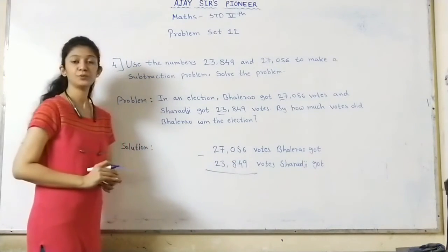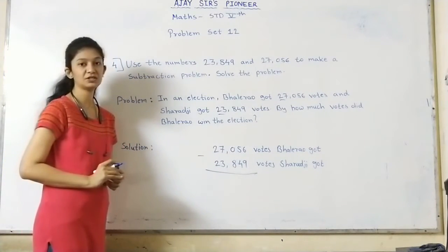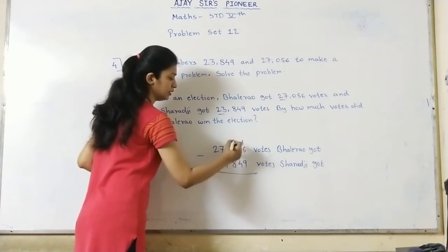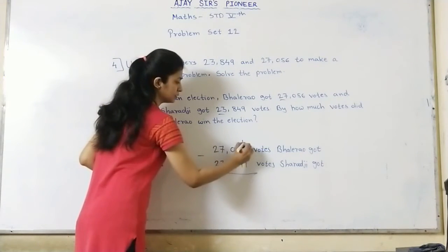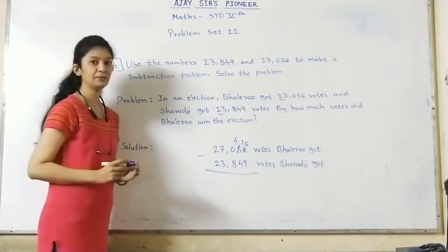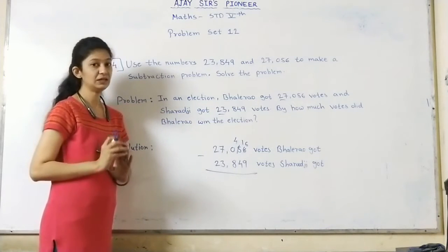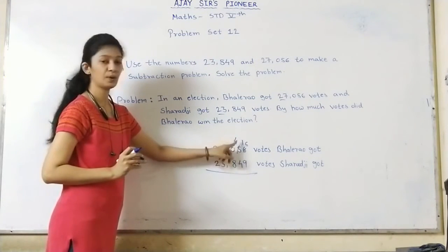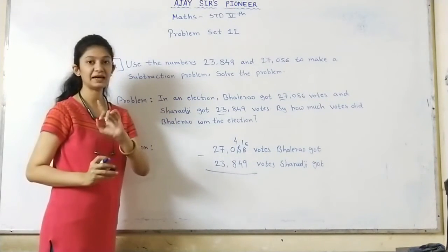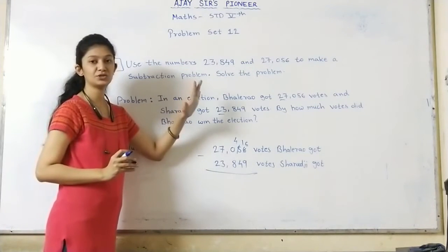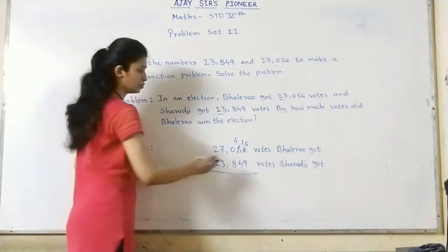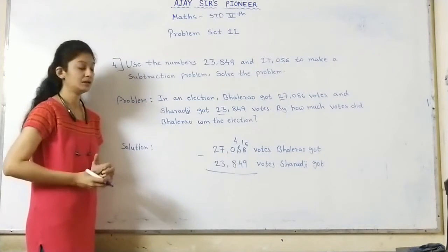27,056 votes Bhalerao got. Then 23,849 votes Sharadji got. Now let's subtract. 6 minus 9, is it possible? No, it's not possible because 9 is bigger than 6. So we need to borrow 1 from the tens place. It becomes 16, and 5 minus 1 equals 4. If we borrow, we need to correct the number immediately.